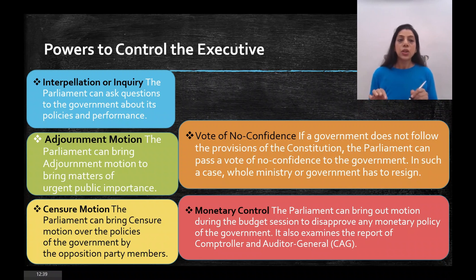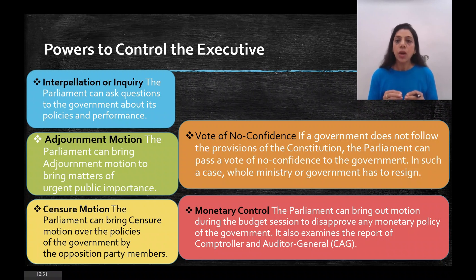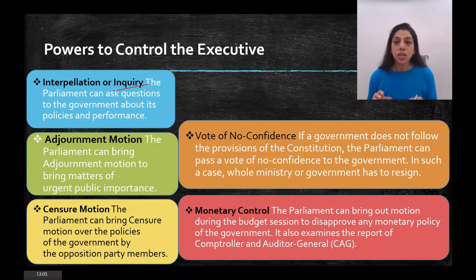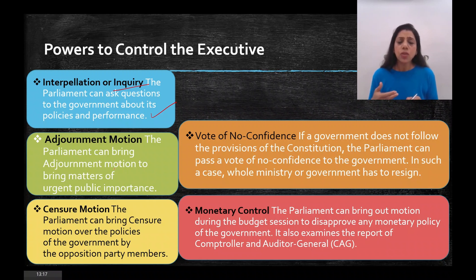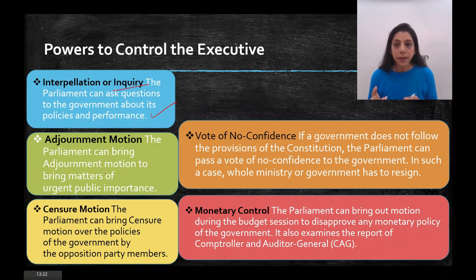Now comes the power to control the executive. The executive is the Prime Minister and his Council of Ministers. Parliament controls them through several mechanisms. First is inquiry — Parliament can ask questions to the government about its policies and performance through Question Hour and Zero Hour. This creates accountability, and when accountability exists, the government performs better.